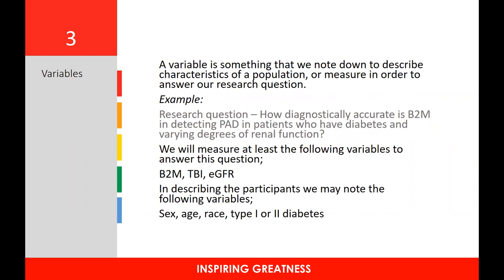Sometimes researchers have not yet developed an understanding of the language of statistics, and the term 'variable' can be quite confusing. A variable is something we note down to either describe the characteristics of a sample or population, or something we measure in order to answer our research question. For example, if our research question is how diagnostically accurate is B2M in detecting peripheral arterial disease in patients with diabetes and various degrees of renal function, we would measure at least B2M, the toe blood pressure index, and the estimated glomerular filtration rate.